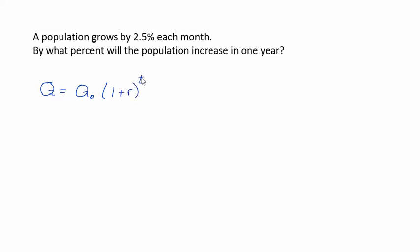So Q sub 0, that's your initial amount, your starting population, and this needs to be when t is equal to 0. R is your rate or your percentage per some time frame right here, and t is your time measured in days, months, years, whatever. These two things need to be the same.